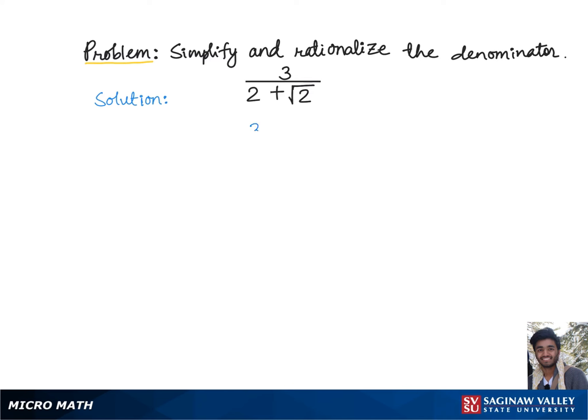To rationalize the denominator of 3 over 2 + √2, we need to multiply both the top and bottom of the fraction by the conjugate of the denominator. Here, conjugate of the denominator means we'll keep these two numbers, 2 and √2, as they are but we'll switch the plus sign to the minus sign.